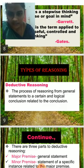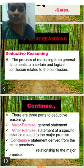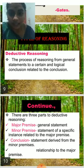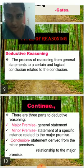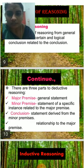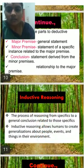The first type is deductive reasoning — the process of reasoning from general statements to a certain and logical conclusion. There are three parts of deductive reasoning: major premise, minor premise, and conclusion.